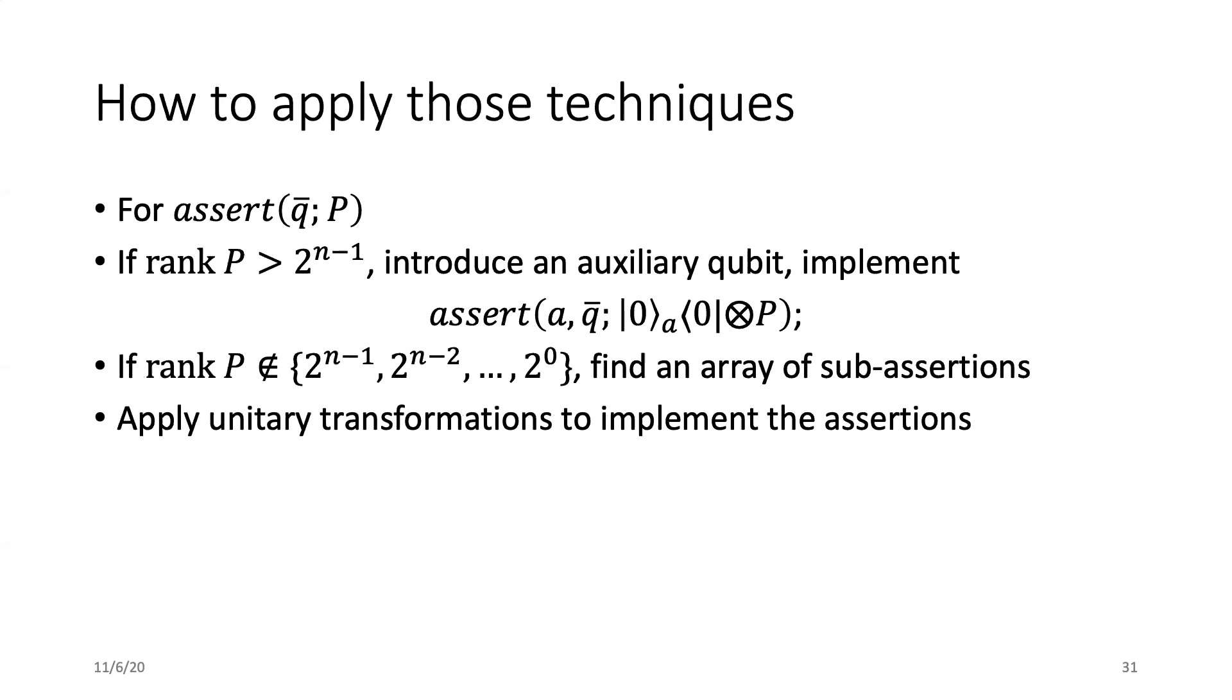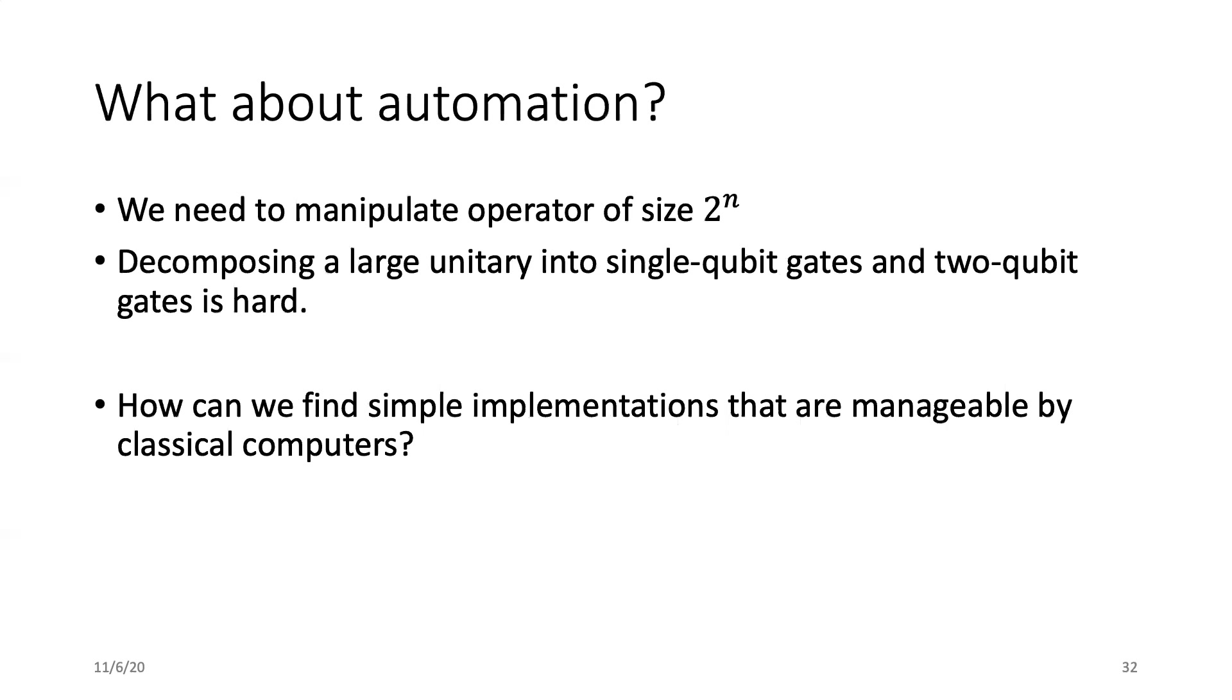Briefly summarize, based on the rank of P, we can apply the three transformation techniques accordingly to make all the assertions executable on a quantum computer. In the last minute, I want to discuss the automation issue. You may notice that we need to manipulate operators of size 2^n when transforming the assertions. Also, decomposing a large unitary into single qubit gates and two qubit gates is very hard. How can we find simple implementations that are manageable by classical computers?